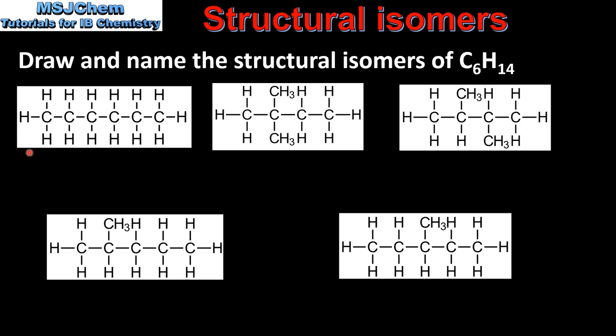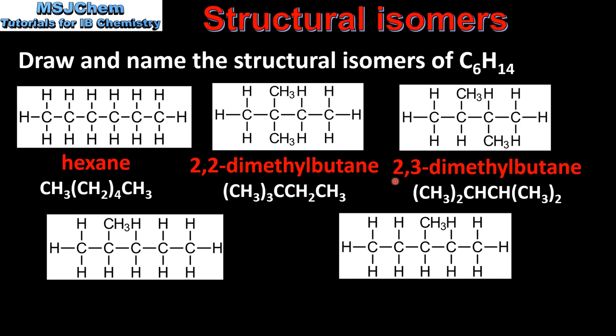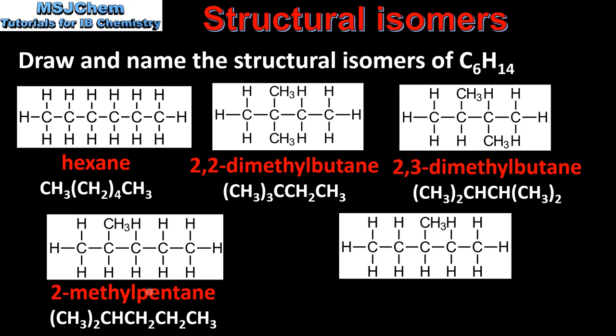So next we'll name the isomers. The first one is hexane. Next we have 2,2-dimethylbutane. Then we have 2,3-dimethylbutane. And at the bottom we have 2-methylpentane and 3-methylpentane.